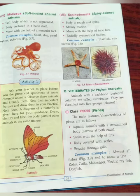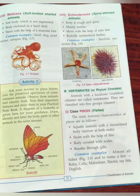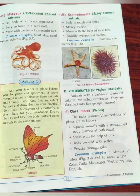Mollusca — soft-bodied, shelled animals. The soft body is not segmented and is enclosed in a hard shell. They move with the help of a muscular foot. Common examples include snails, turtles, pearl oysters, and octopuses. Echinodermata — spiny-skinned animals. The body is rough and spiny, mainly marine, and they move with the help of tube feet. Their bodies are radially symmetrical. Common examples include starfish and sea urchins.